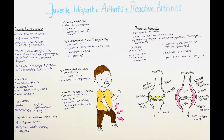Juvenile idiopathic arthritis is a chronic arthritis in children usually before the age of 16, which affects one or more joints and is subdivided into different types and categories. The different types are oligoarthritis, rheumatoid factor negative polyarthritis, enthesitis-related arthritis, psoriatic arthritis, systemic arthritis called Still's disease, and rheumatoid factor positive polyarthritis.